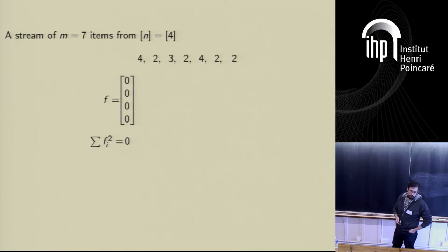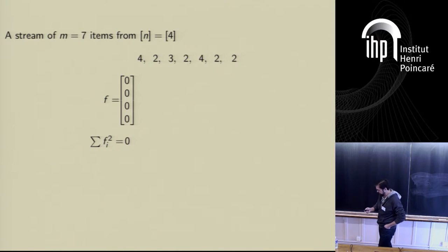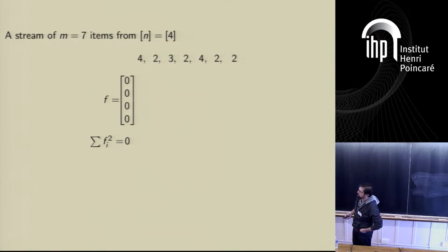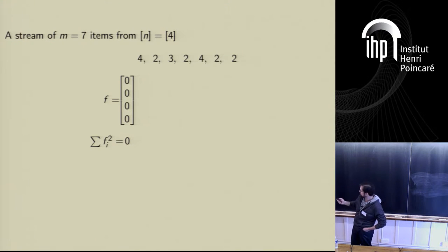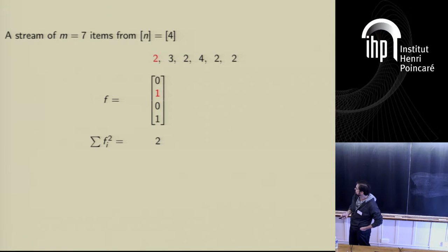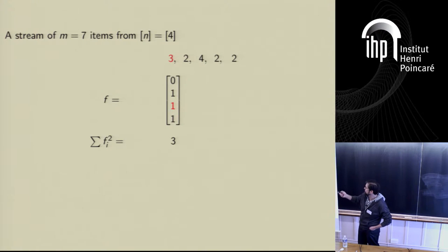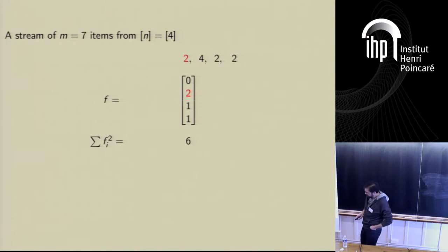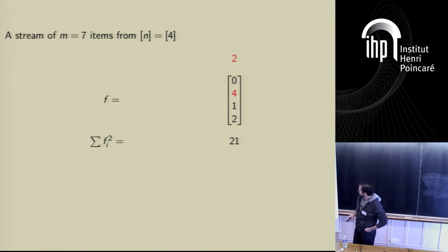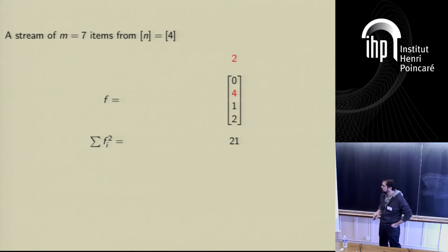A stream is just a long list of additive updates to some high-dimensional vector. In this case the dimension is four, and each update identifies a coordinate of the vector and results in an increment to that particular coordinate. Our goal is to compute some function of the vector at the end of the stream. As we read the stream, the vector changes — we increment the third coordinate when we read three, the second coordinate when we read two, and our goal is to approximate the sum of the squares of this vector at the end of the stream.